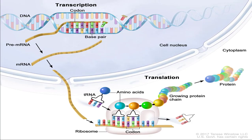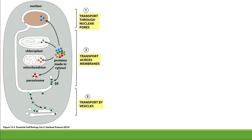Most of the organelles inside the eukaryotic cell perform their function with enzymes and proteins, and most of the proteins are translated inside the cytoplasm. There are a few proteins that are translated inside the mitochondria and chloroplast, but the majority of proteins are translated inside the cytoplasm. These proteins from the cytosol need to enter different organelles in order to perform their function.